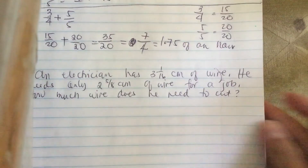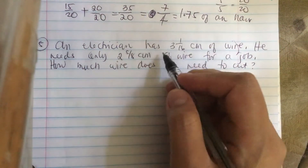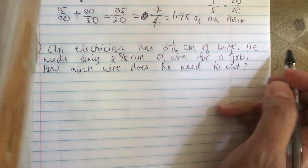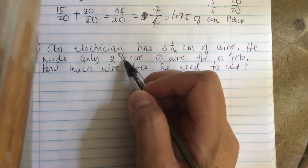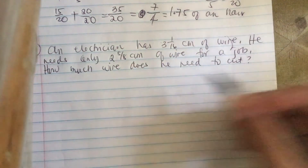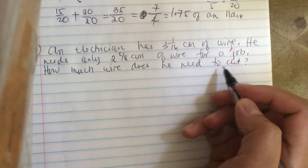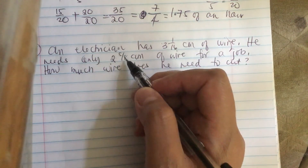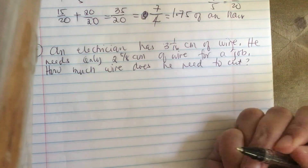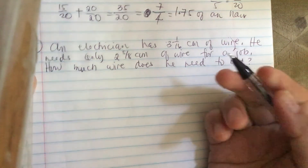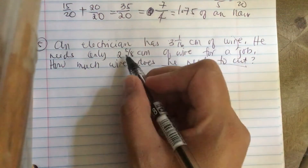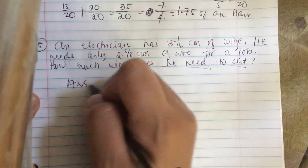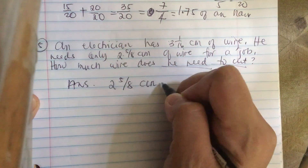An electrician has 3 and 1 over 16 centimeters of wire. He needs only 2 and 5 over 8 centimeters of wire for a job. How much wire does he need to cut? If he needs 2 and 5 over 8 centimeters of wire, then the answer is 2 and 5 eighths centimeters.